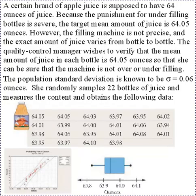In this problem, 22 bottles are randomly selected and the quantity of apple juice in each bottle is measured. From this random sample, we calculate the sample mean to get an estimate of the population mean of the mean amount of juice in all of the bottles.